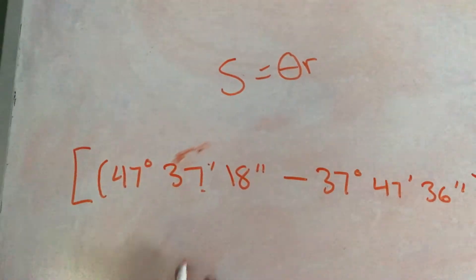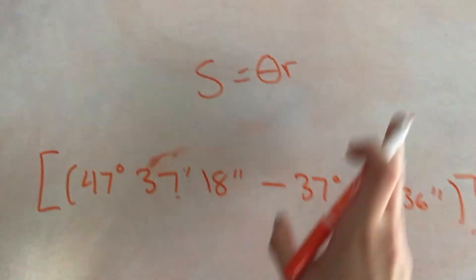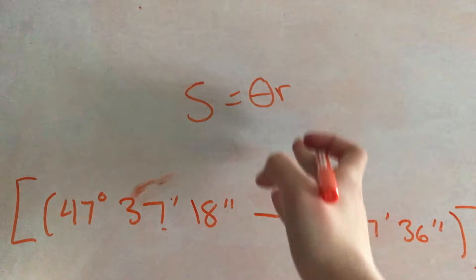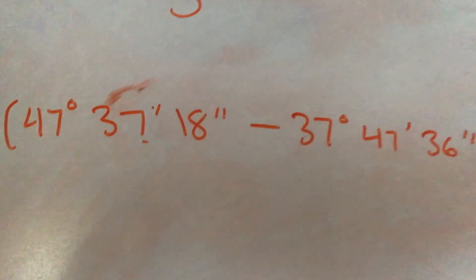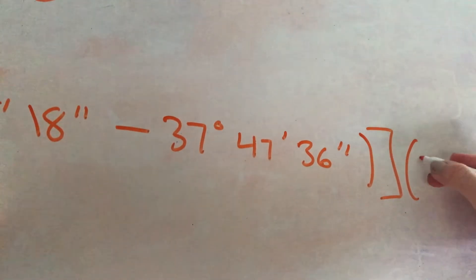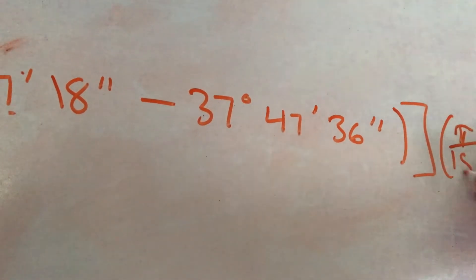And since this is in degrees, in order to use that equation we need to convert this into radians. When we convert to radians, we just multiply by pi over 180.